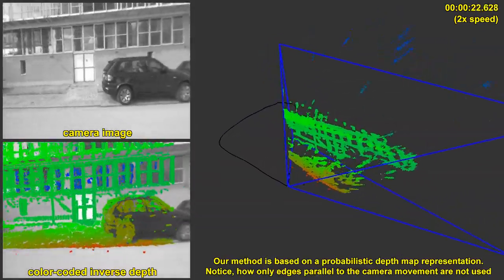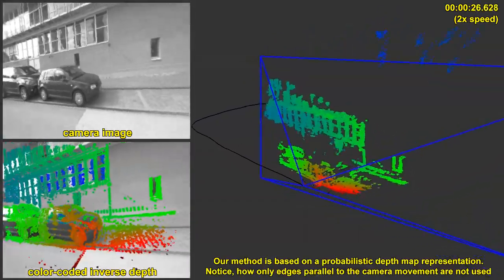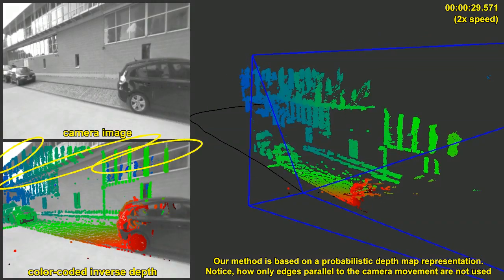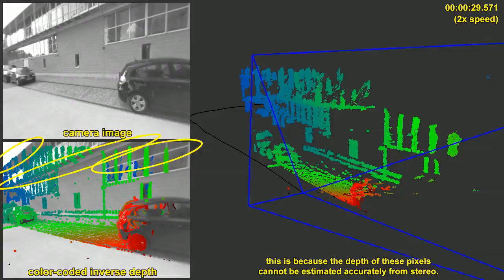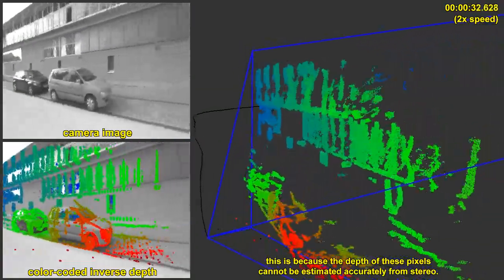Our method is based on a probabilistic depth map representation. Notice how only edges parallel to the camera movement are not used. This is because the depth of these pixels cannot be estimated accurately from stereo.